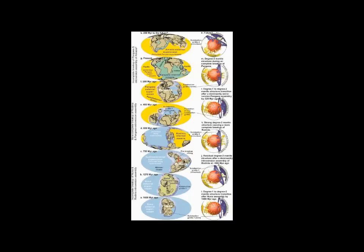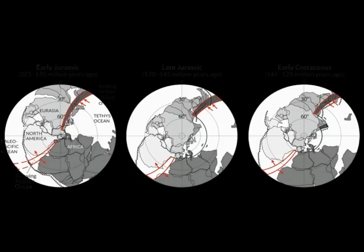Lead researcher John Curtin Distinguished Professor Zheng-Xiang Li of the School of Earth and Planetary Sciences at Curtin University said the assembly and breakup of supercontinents occurred in alternating cycles of about 600 million years. In the past 30 years, researchers discovered that Pangea-like supercontinents existed at least twice before Pangea.